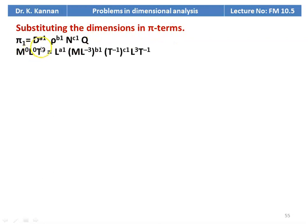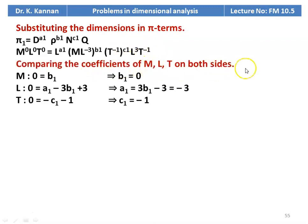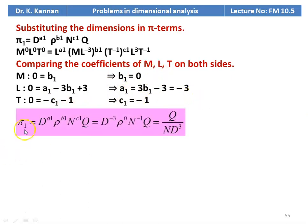For pi1: M⁰L⁰T⁰ = L^a1 · (ML⁻³)^b1 · (T⁻¹)^c1 · L³T⁻¹. Comparing: b1 = 0, c1 = −1, a1 = −3. Therefore pi1 = d⁻³ · rho⁰ · n⁻¹ · q = q / (n · d³).